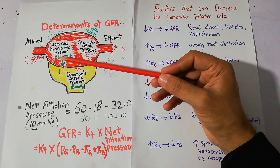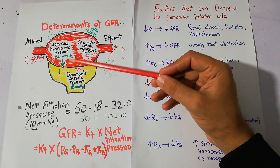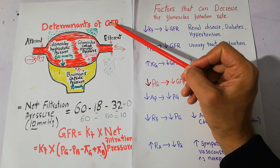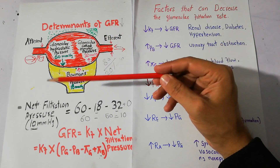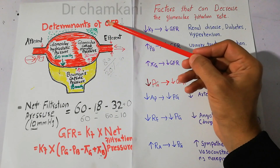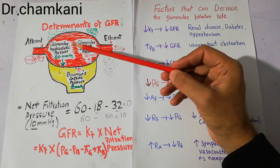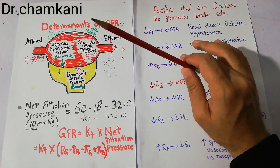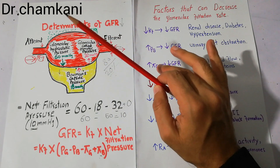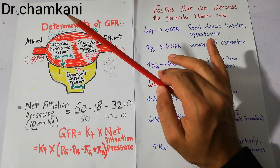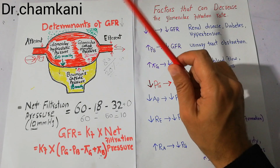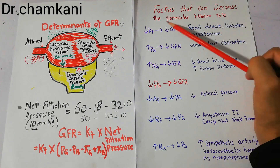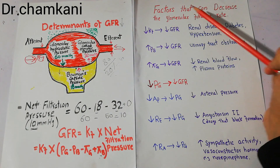When it comes to filtration, the rate of filtration — the speed with which filtration is occurring — is very important. That rate, the GFR, is influenced by so many factors. We have discussed all those factors in detail in our previous lectures. Now, coming back to the factors that can decrease the glomerular filtration rate.